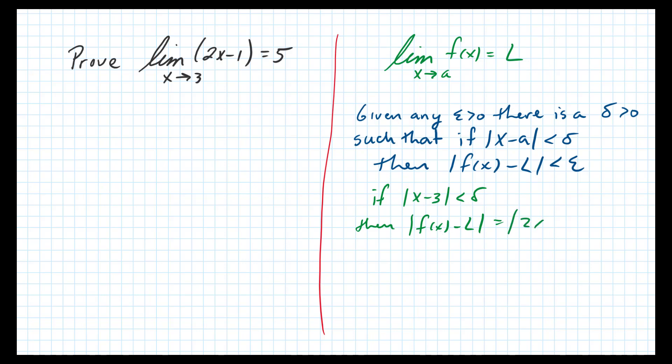So f(x) is 2x minus 1, minus L, L is 5, that's the limit. And when I do the math here, I'll get 2x minus 6. That 2 can factor out of the absolute value, leaving me with 2 times absolute value of x minus 3.